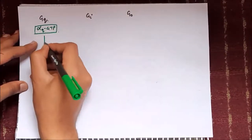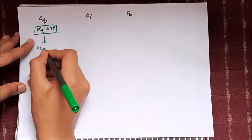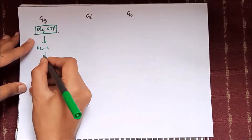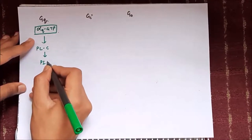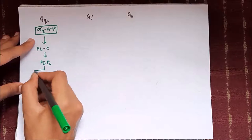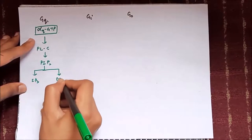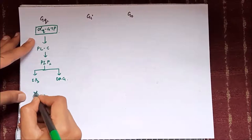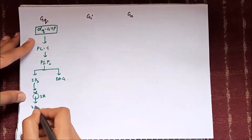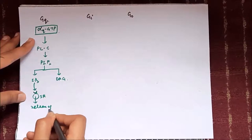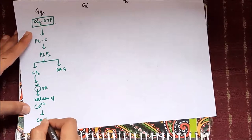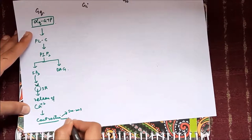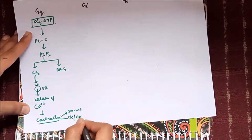In the GQ subtype of receptors, alpha-Q-GTP causes activation of phospholipase C. Phospholipase C breaks phosphoinositol diphosphate into IP3 and diacylglycerol. IP3 receptors on the sarcoplasmic reticulum cause release of intracellular calcium, resulting in contraction of smooth, skeletal, and cardiac muscles.